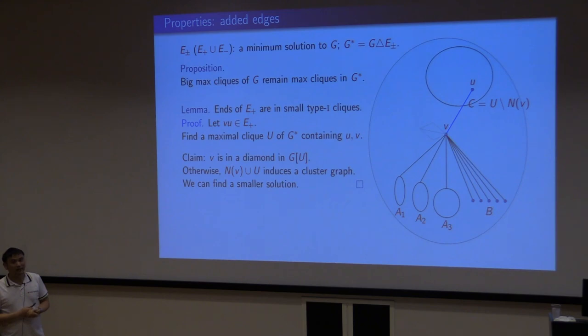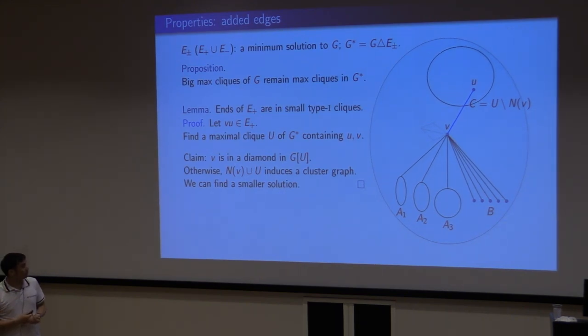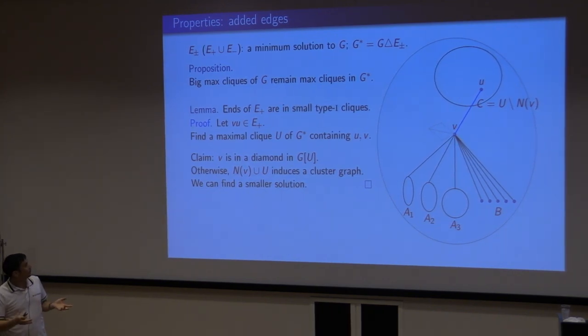We can always find another solution better than making your clique. For example, if B is larger, then you can cut C. If C is larger, then you can connect B and C and cut from other parts. Basically, this is not an optimal solution.